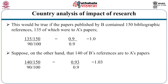Suppose instead that 140 of B's references are to A's papers: (140/150) / (90/100) = 0.93 / 0.9 = 1.03, showing A is cited more than expected.